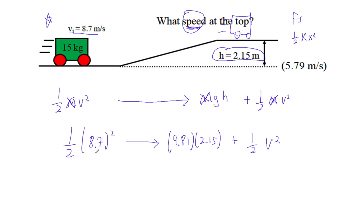So my strategy here is I'm going to go 0.5 times 8.7 squared. That's like 37.845, and I'm going to subtract this term. So minus 9.81 times 2.15. So now I've got 16.7535, and that's one-half v squared.